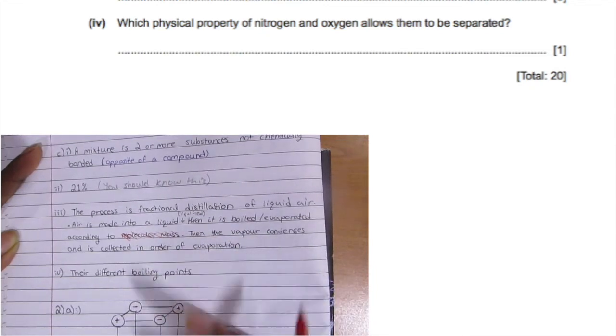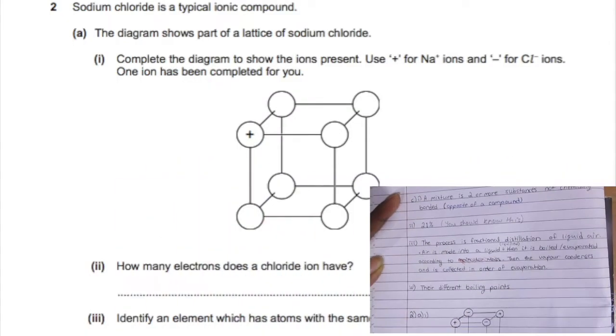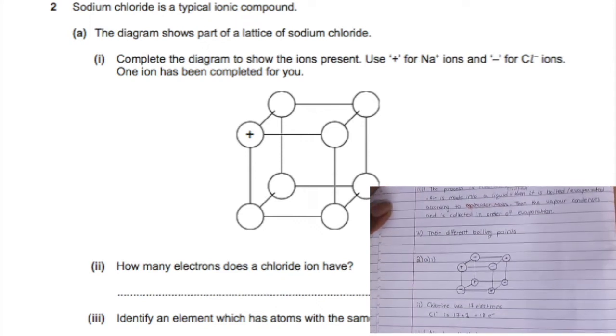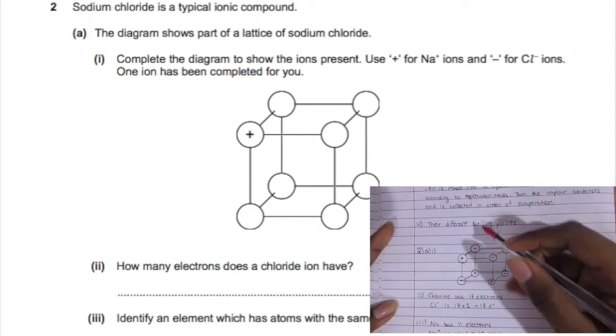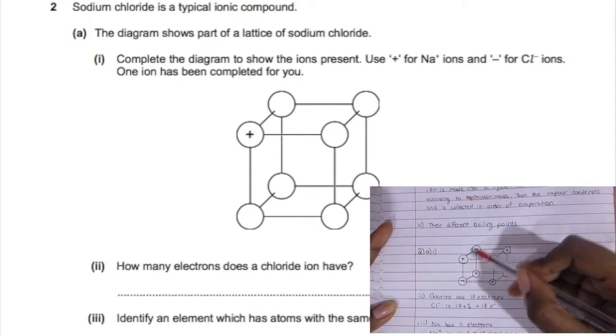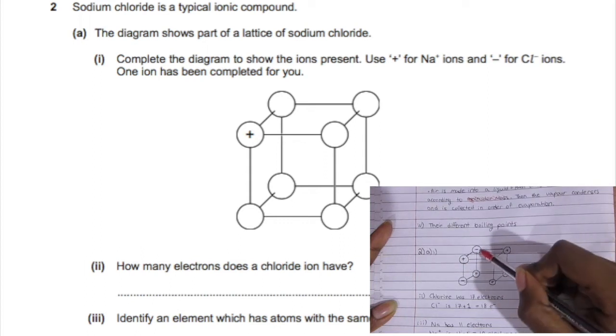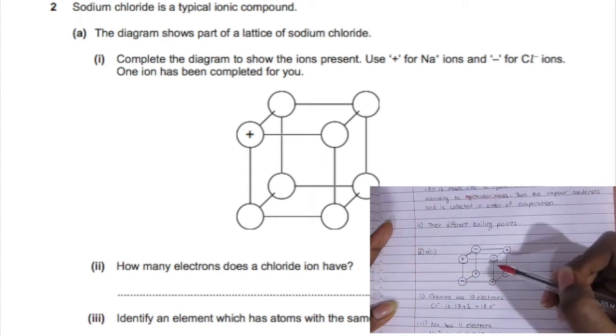For question two, we're supposed to complete this lattice. With the positive ion, around it is all going to be negative, and around the negative will be positive. That's just it, because opposites attract and like charges repel.